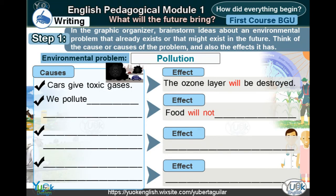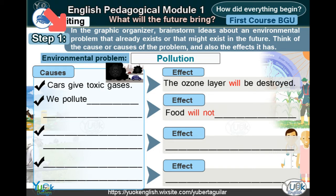Writing. Step 1: In the graphic organizer, brainstorm ideas about an environmental problem that already exists or that might exist in the future. Think of the cause, or causes of the problem, and also the effects it has. Write them in the boxes.